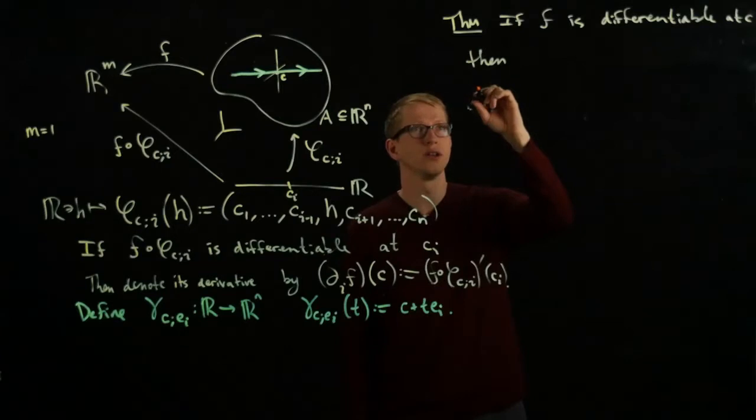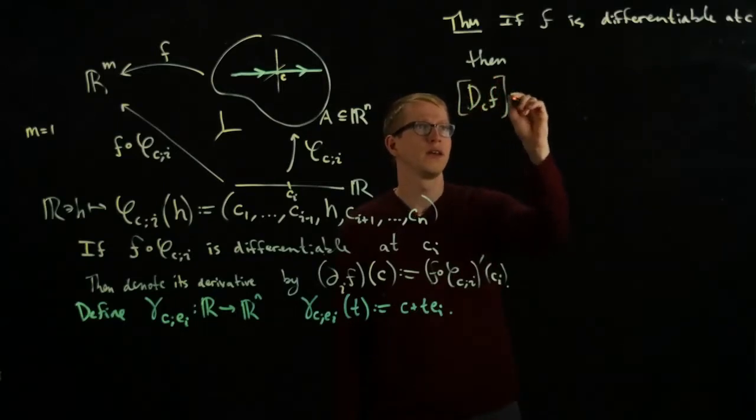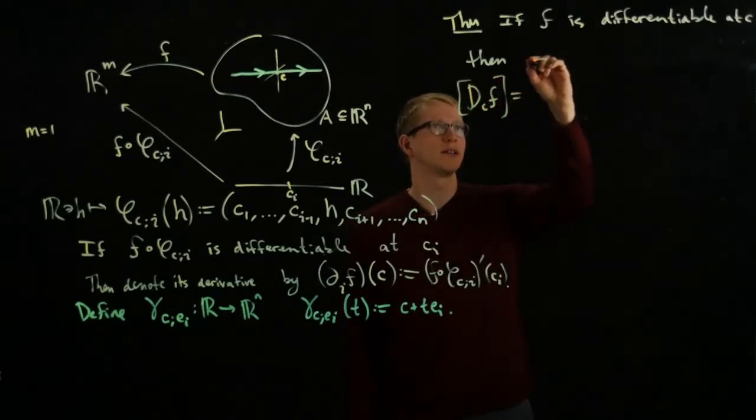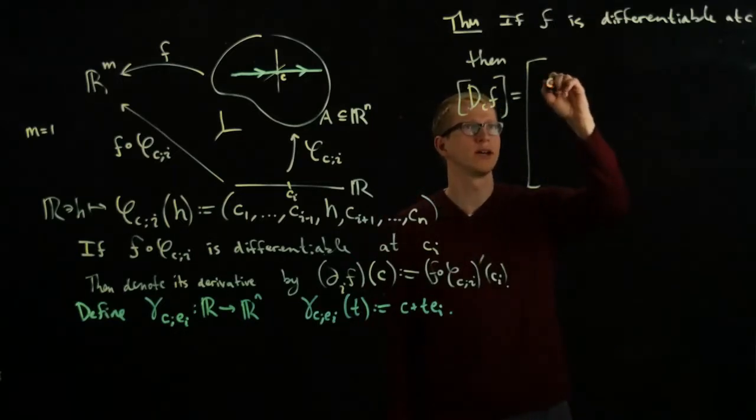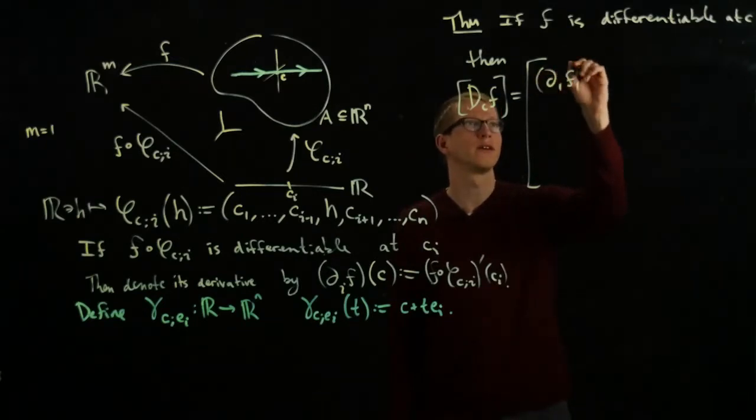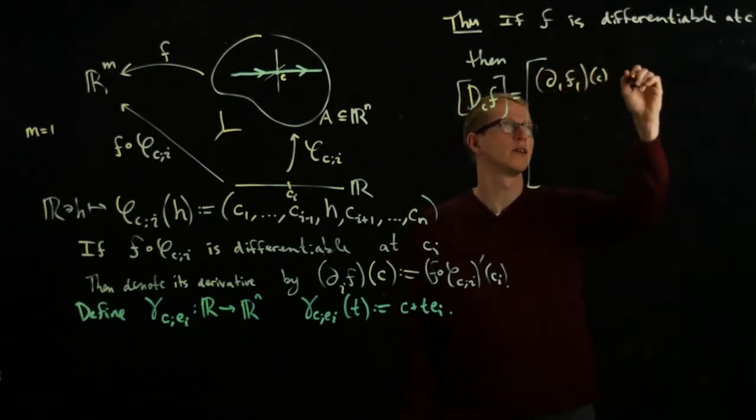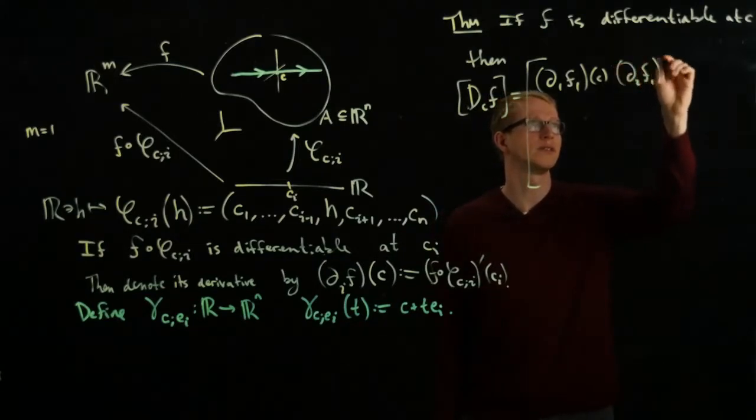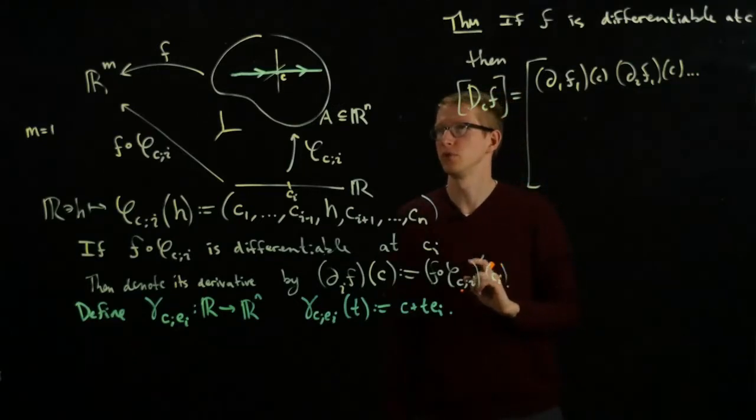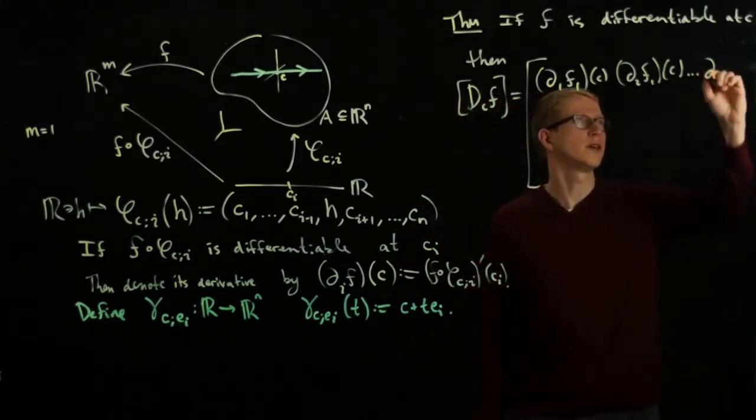The differential D_C F associated to F is given by D_C F, and it's a matrix whose coordinates are given precisely by ∂_1 F_1 at C, ∂_2 F_1 at C, and so on, all the way up to ∂_n F_1 at C.